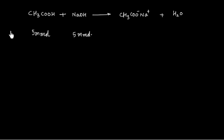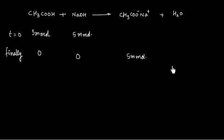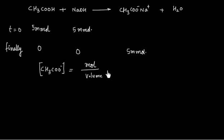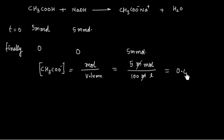Finally, there will be no acid and no base remaining, but we will have 5 millimole of acetate ion. We can calculate the concentration of acetate ion: moles divided by volume = 5 millimole / 100 mL = 0.05 mol per liter, that is 0.05 M.